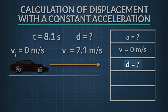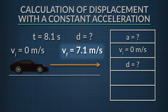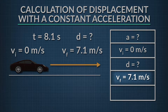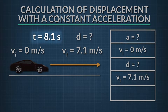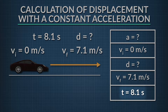Since we know that's the variable we're solving for. We know the final velocity is 7.1 meters per second, so we can plug that in for final velocity. We also know that the time elapsed was 8.1 seconds, so we can plug that in for t.